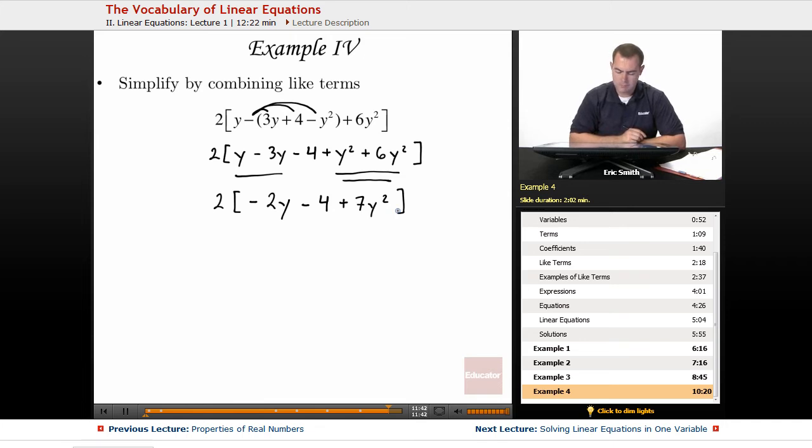Alright, that looks good. I'm going to go ahead and distribute my 2. It's not really going to help me combine any more like terms, but it will definitely help me see my final results. So negative 4y minus 8 plus 14y squared.